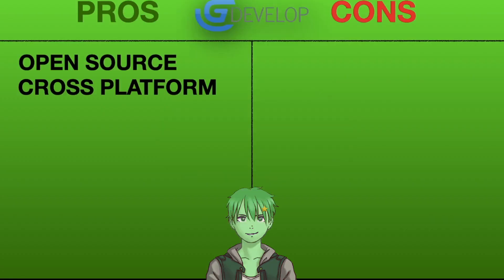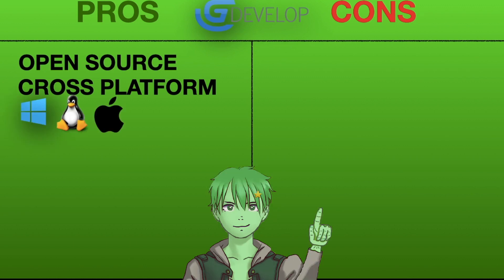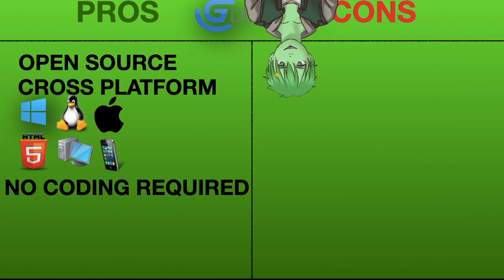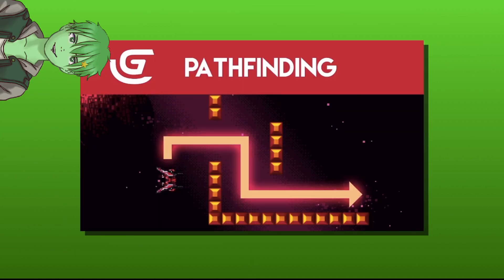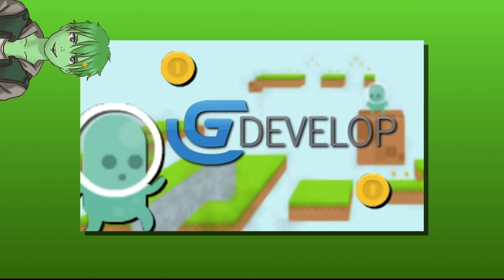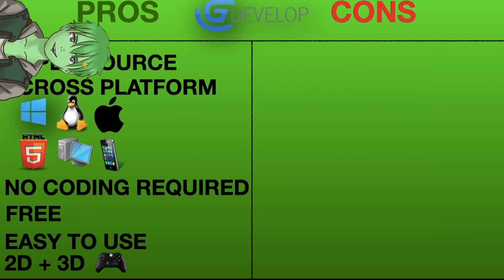Number 9: GDevelop. GDevelop is an open source and cross-platform game engine for Windows, Linux and Mac which allows you to create browser games, PC games and mobile games without needing to write code. The pros of GDevelop are that it is free, open source and cross-platform. It is very easy to use, especially for beginners that want to get started with game development. It features a built-in physics, pathfinding and platforming engine, and it also allows you to create both 2D and 3D games.